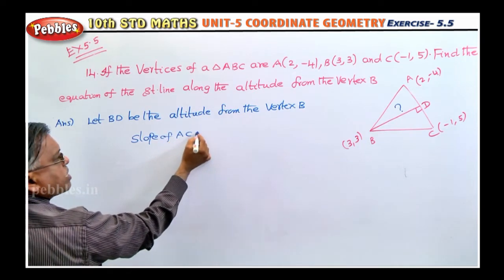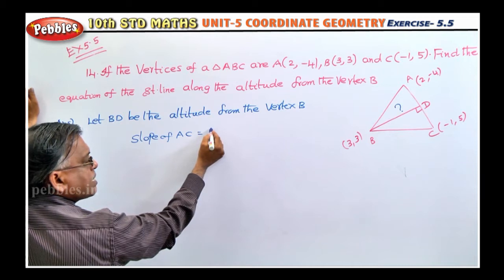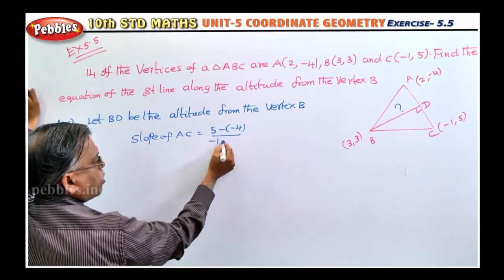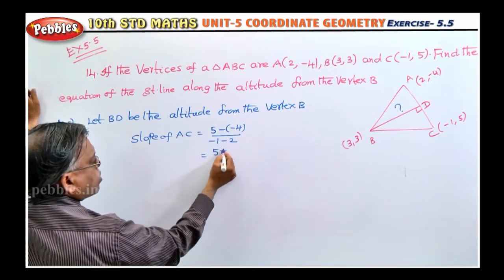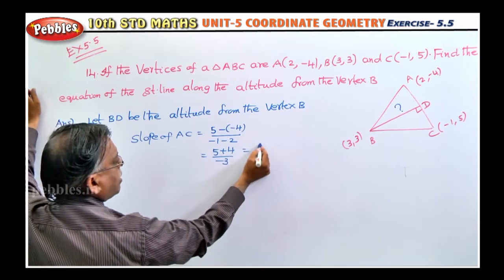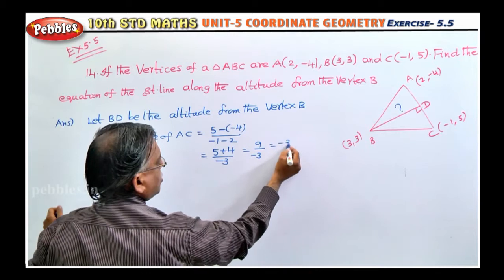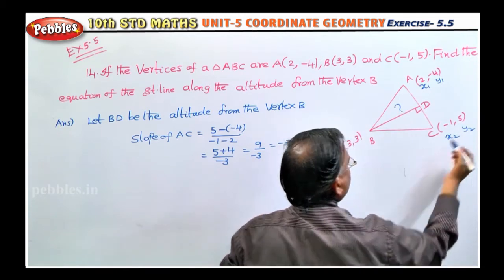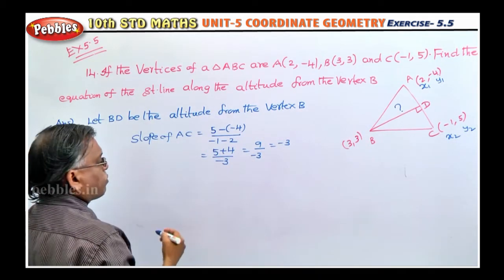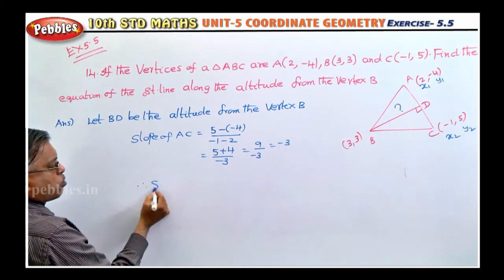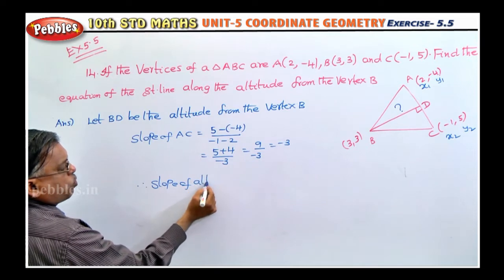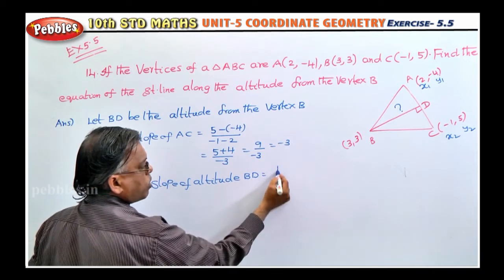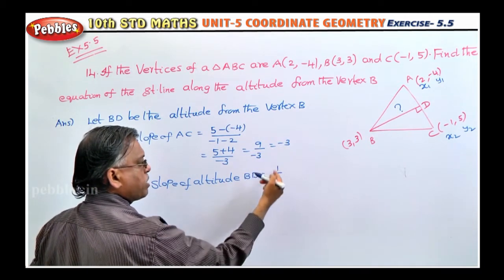Slope of AC = (y₂ - y₁) / (x₂ - x₁) = (5 - (-4)) / (-1 - 2) = (5 + 4) / (-3) = 9 / (-3) = -3. So slope of AC is -3. Therefore, slope of altitude BD is the negative reciprocal: 1/3. Change the sign — negative becomes positive.